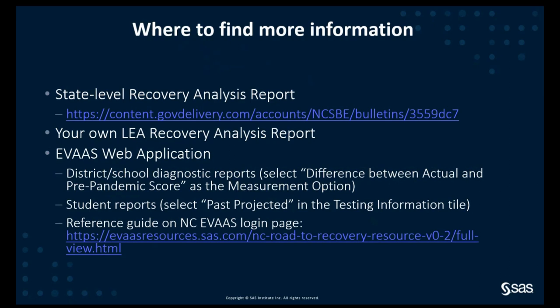As our final agenda topic, I want to review a few places where you can find additional resources related to this impact analysis. First, I've included the link to the state-level reports — this link includes a press release and an FAQ that you might find useful. Second, of course, you have two years of your LEA reports. Third, there are additional resources within the EVOS web application. There are district and school diagnostic reports that show the difference between students' actual and pre-pandemic projected score. There are student reports that show what a student's projected score was in the prior year, and the EVOS login page has a great resource that shows you how to navigate the EVOS website and interpret results with an eye towards understanding the pandemic's impact and students' recovery. This resource includes click-by-click instructions, as well as guiding questions for interpreting your results.